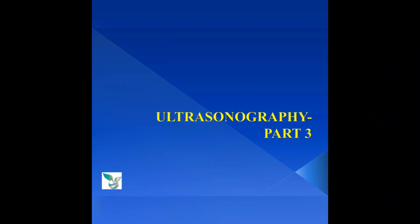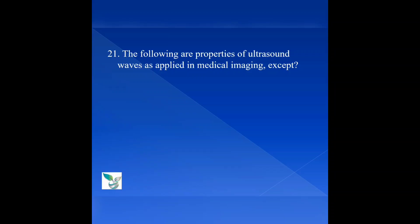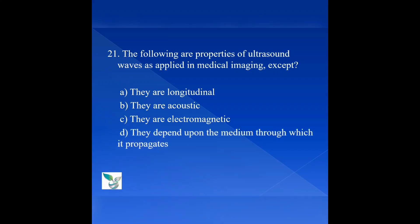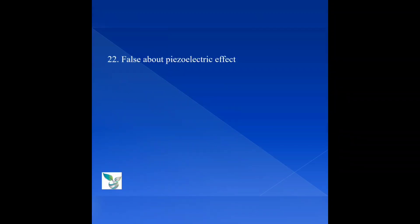Patiently watch till the end and stay tuned. Question 3 begins part 3 — tutoring of ultrasonography. Moving on to the 21st question: The following are properties of ultrasound waves as applied in medical imaging, except — option A, they are longitudinal; option B, they are acoustic; option C, they are electromagnetic; and option D, they depend upon the medium through which it propagates. The answer is option C — they are electromagnetic.